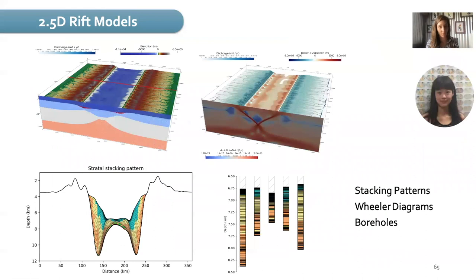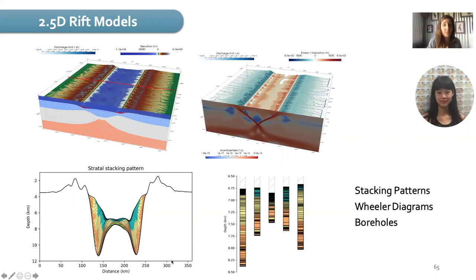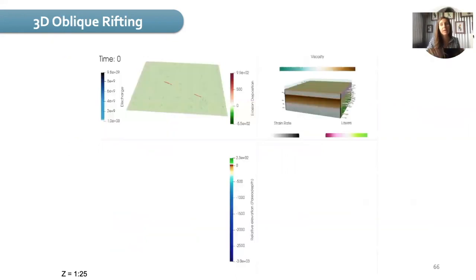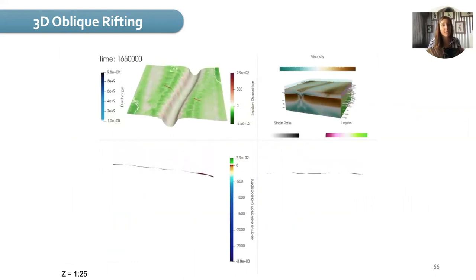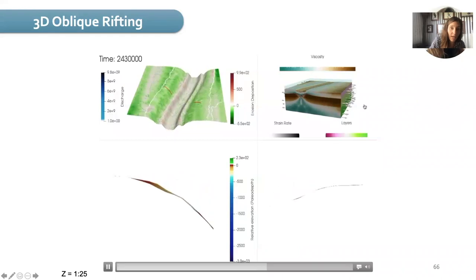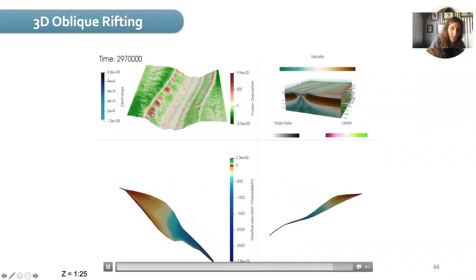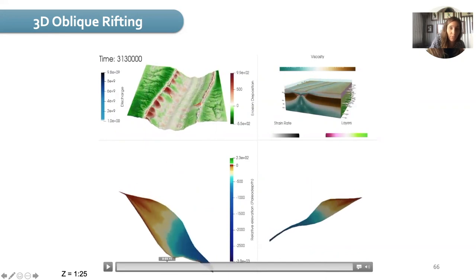When we started the global research stream, we had the work of Romain Boucher with a 2.5D rift model — a 2D Underworld model with a 3D Badlands model at the top. Thanks to structural work, we were able to extract sediment patterns, Wheeler diagrams, and boreholes. Then we started working with Romain on a 3D oblique rift model. You have the oblique rift, the Badlands area, and two cross sections on both margins where you can see sedimentation evolving through time. At this time, we faced many different issues as we started to understand the boundary conditions of our model.